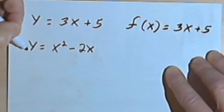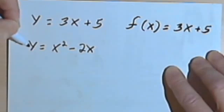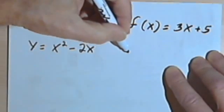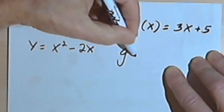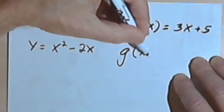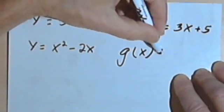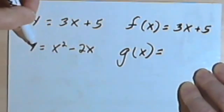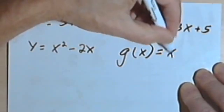Now I'm going to take the second equation and give that a different name, basically a different letter. So I can call that g. So this is going to be read as g of x equals, and then I'll just copy what the old y used to equal, x squared minus 2x.